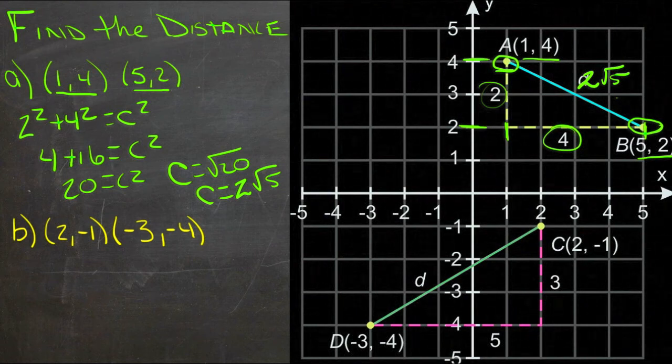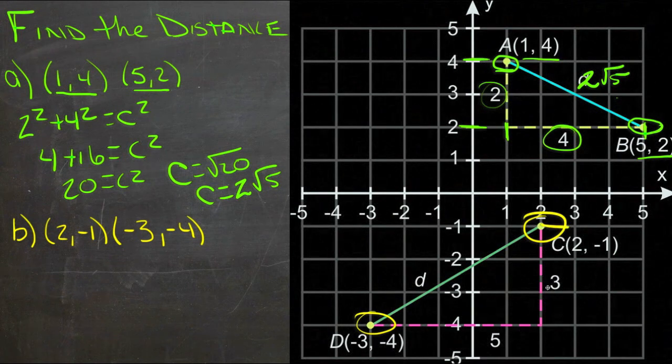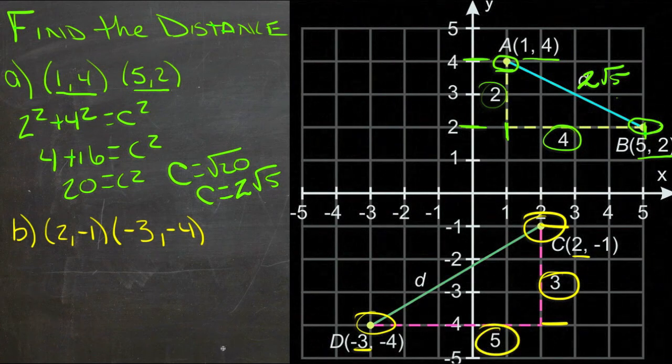So let's take a look at the other one. Here we have points (2,-1) and (-3,-4). So our differences, y difference goes from -1 to -4. So that's a difference of 3. And our x goes from 2 to -3. So that's a difference of 5.